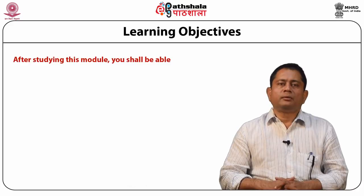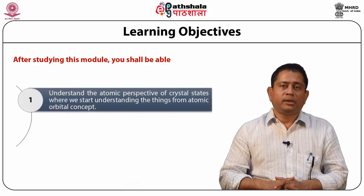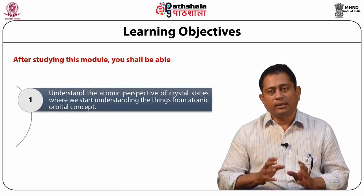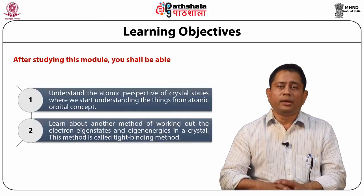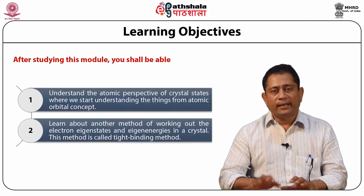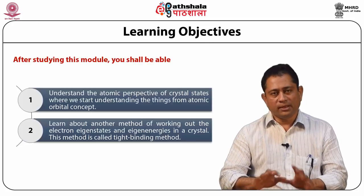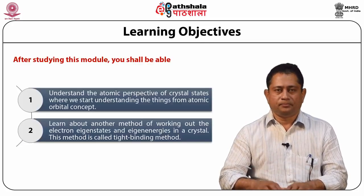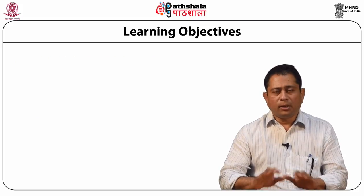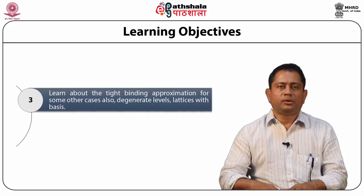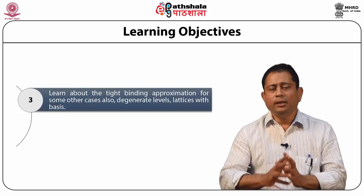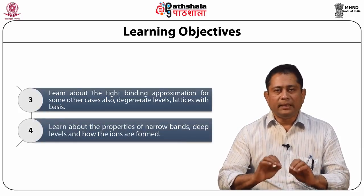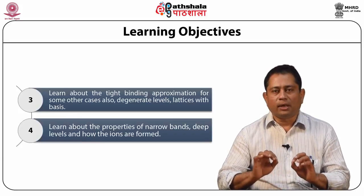Learning Outcomes. After studying this module you shall be able to: one, understand the atomic perspective of crystal states, starting from atomic orbital concepts; two, learn about the tight binding method for working out electron eigenstates and eigenenergies in a crystal; three, study the tight binding approximation for degenerate levels and lattices with bases; and four, learn about the properties of narrow bands, deep levels, and how ions are formed.